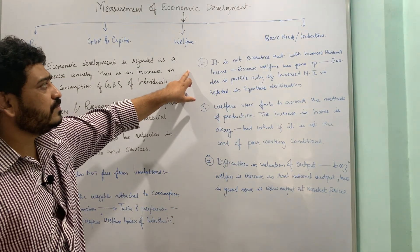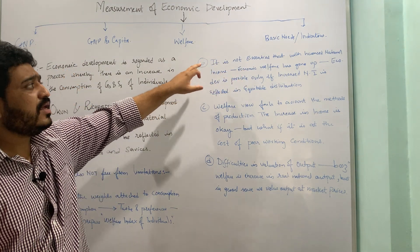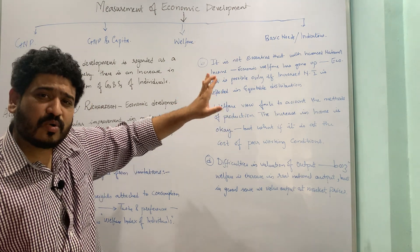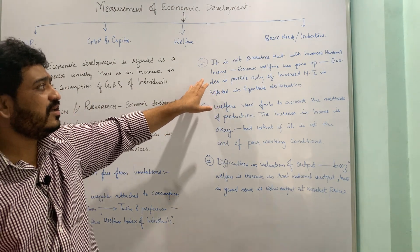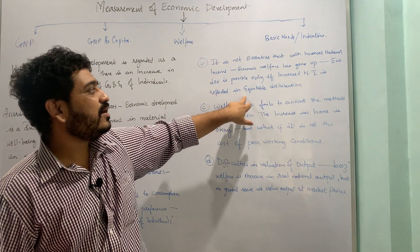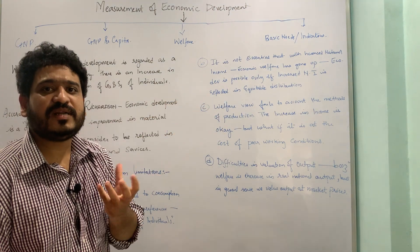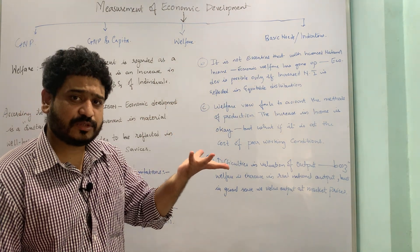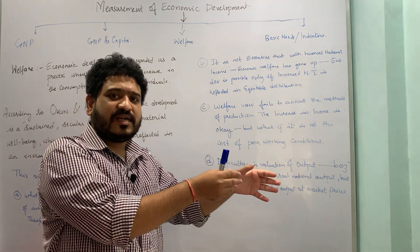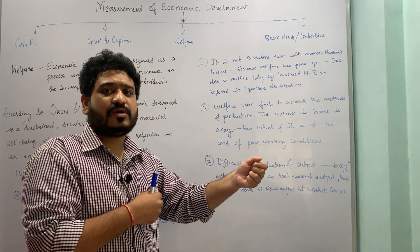The second limitation is that it is not essential that with increased national income, economic welfare has gone up. Economic development is only possible if increased national income is reflected in equitable distribution of the same. If there is an increase in national income, it should be distributed equally amongst all individuals of the society. If it is going to a certain segment, such as the rich, then the gap between the rich and the poor keeps increasing.